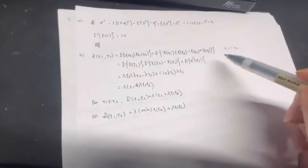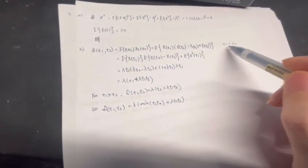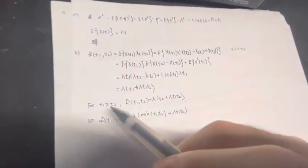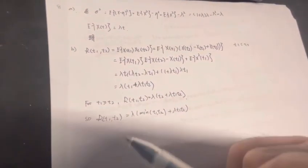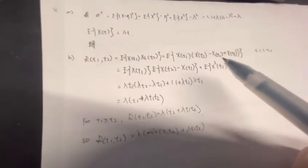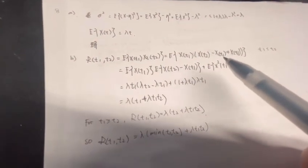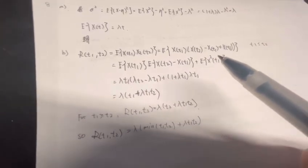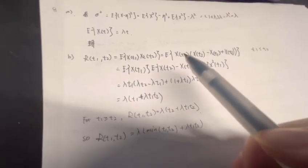t1 is less than or equal to t2, but in this condition t1 is larger than or equal to t2. So this part will equal X(t1) minus X(t2) plus X(t2).